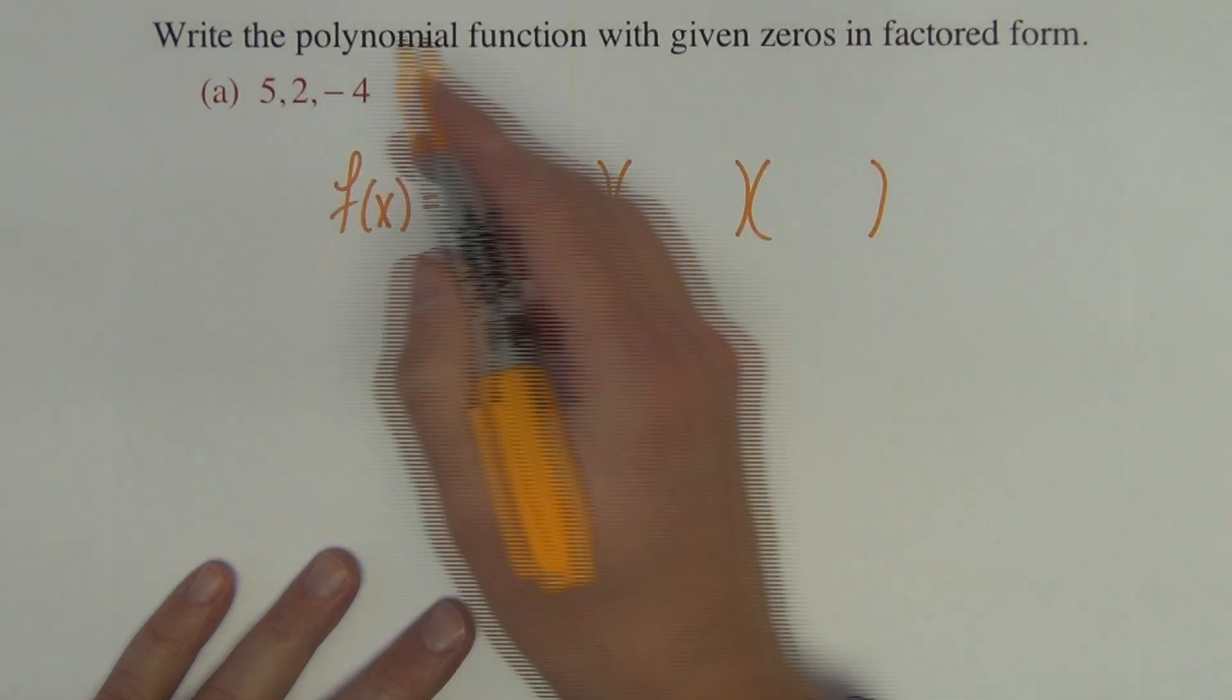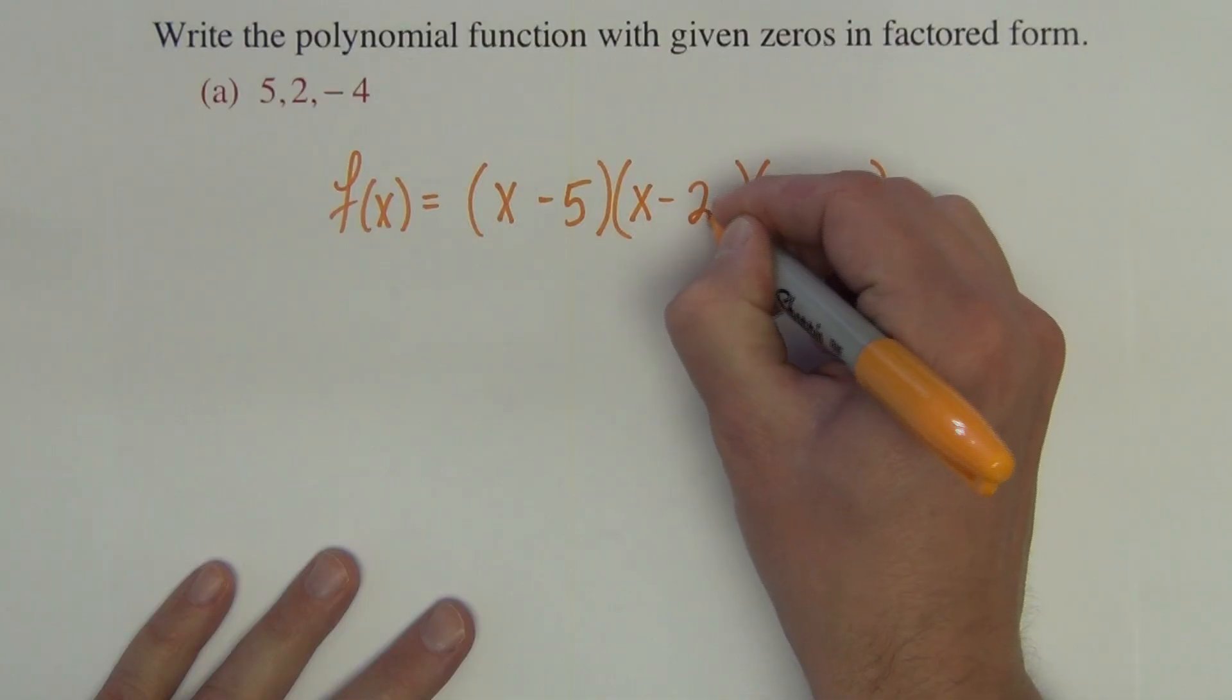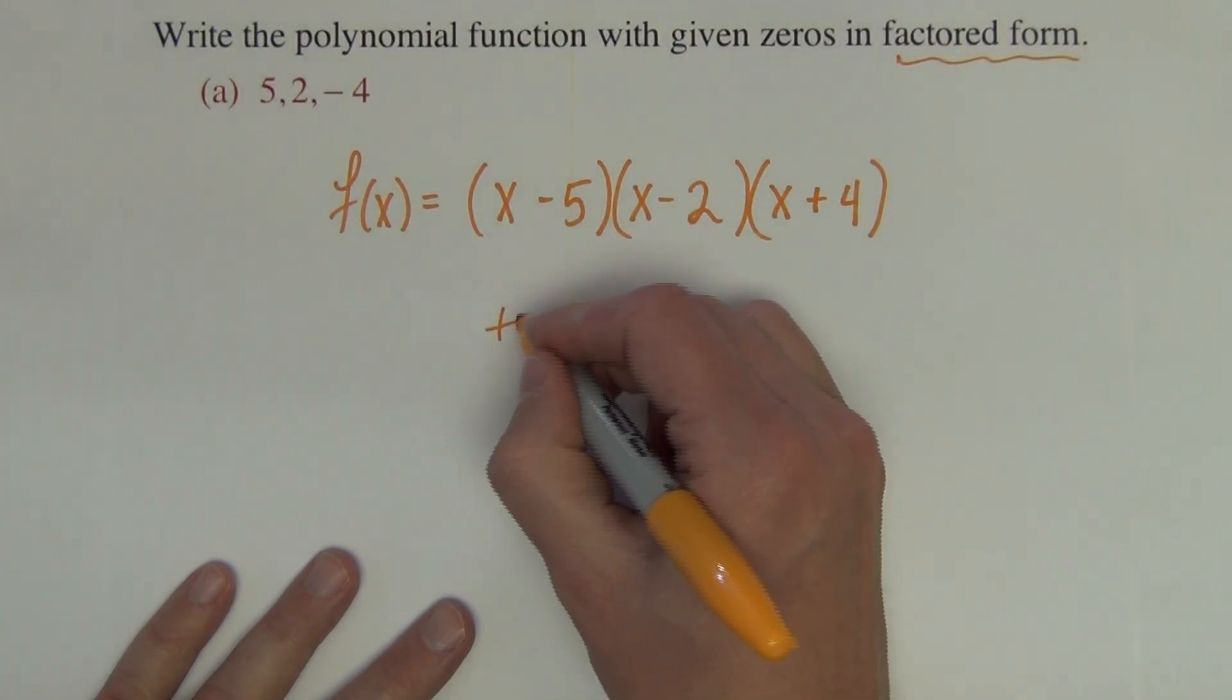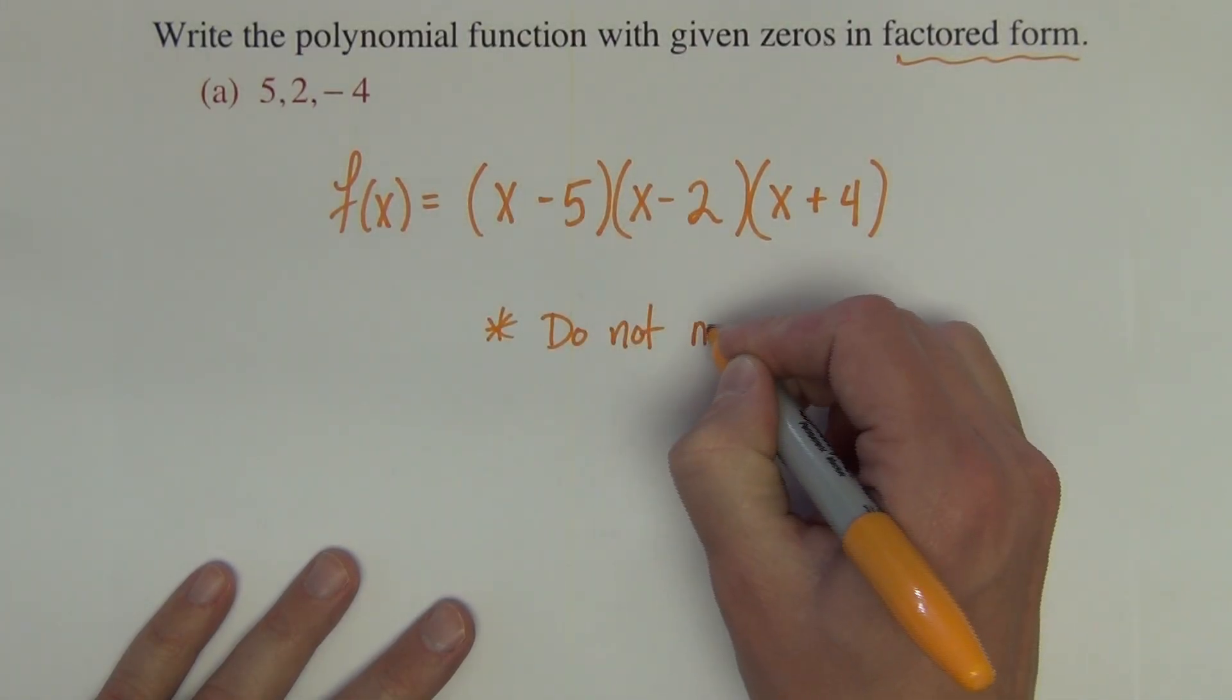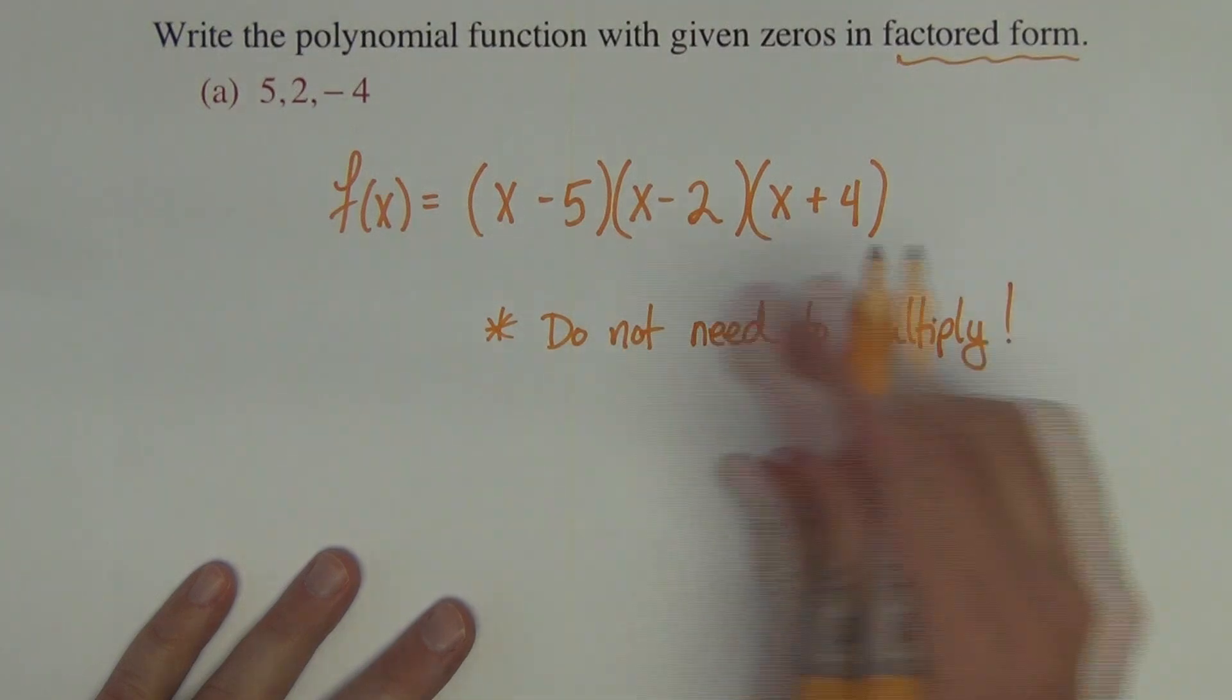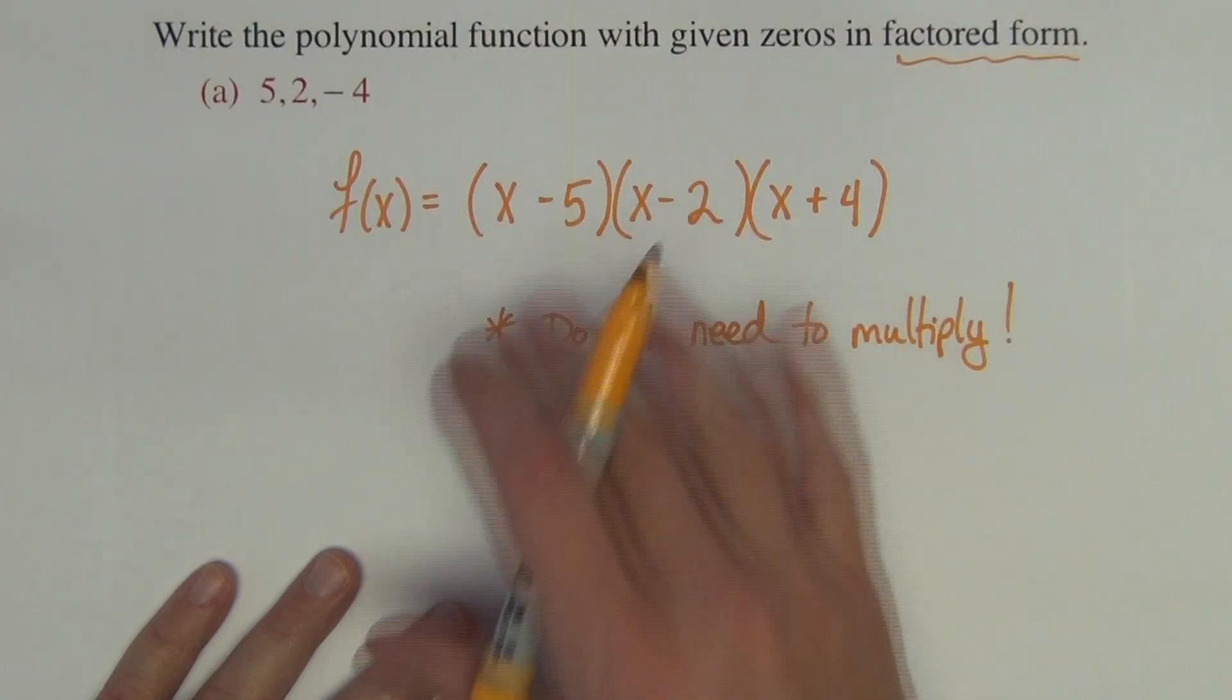If positive 5 is the zero, then x minus 5 is the factor. The positive 2 is x minus 2, and the negative 4 is x plus 4. That is factored form, so you do not need to multiply. That is as far as we need to go on the final exam. Because again, I am just testing that relationship between zeros and factors. And do you understand that?